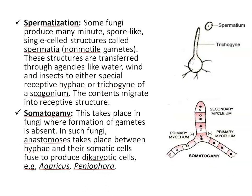The next method is spermatization. Some fungi produce minute spore-like single-cell structures called spermatia — non-motile structures. These are then transferred through agencies like water, wind, or insects to either a special receptive hypha or trichogyne. The contents then migrate into the receptive structure, and ultimately fusion of two nuclei takes place and a zygote is formed.